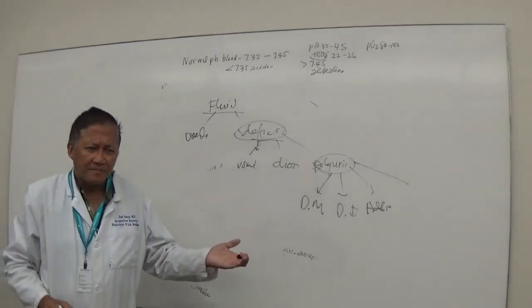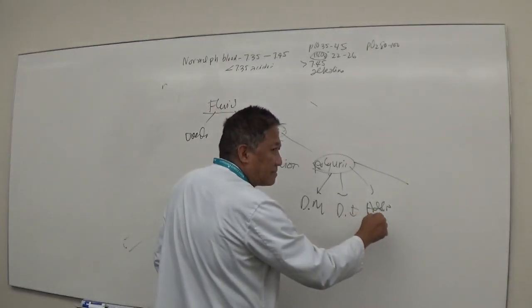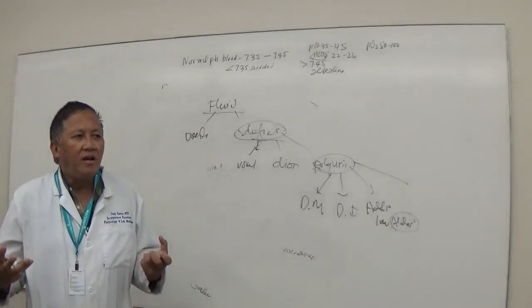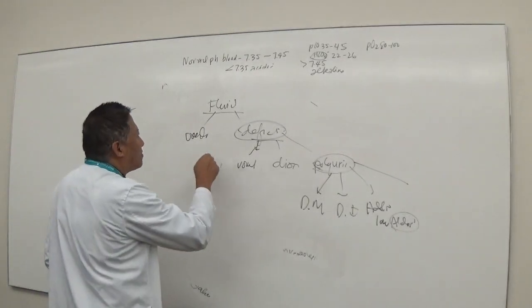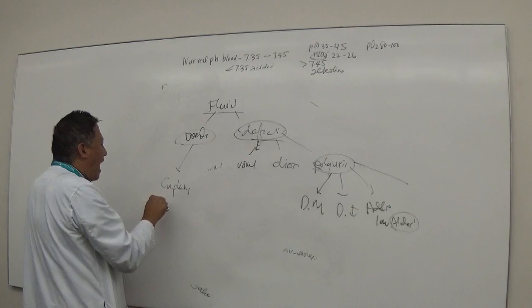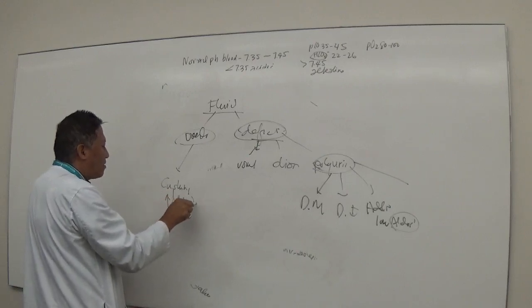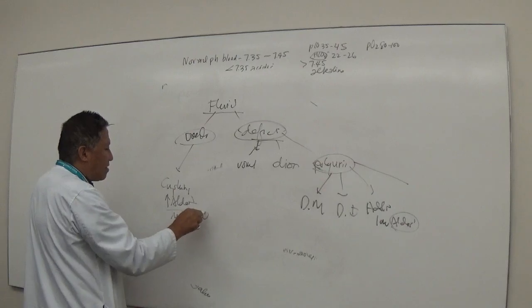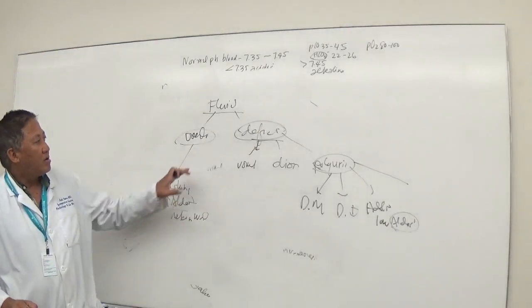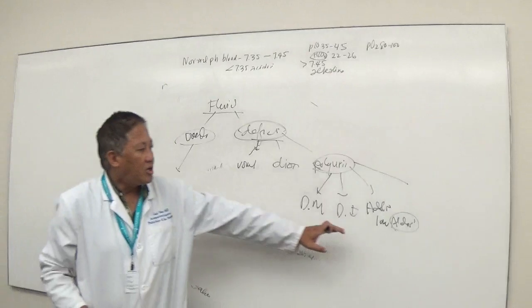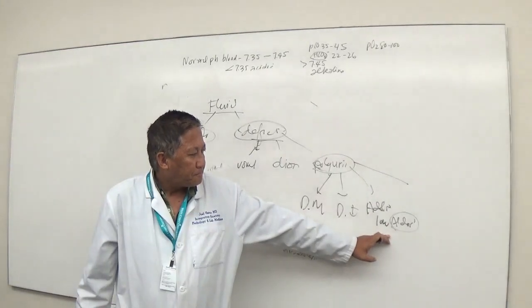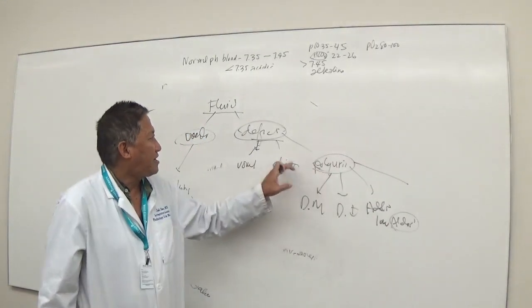When do you develop polyuria? Diabetes mellitus, diabetes insipidus, Addison's disease. Why in Addison's? Low aldosterone. What does aldosterone do? Retain water, reabsorb water.